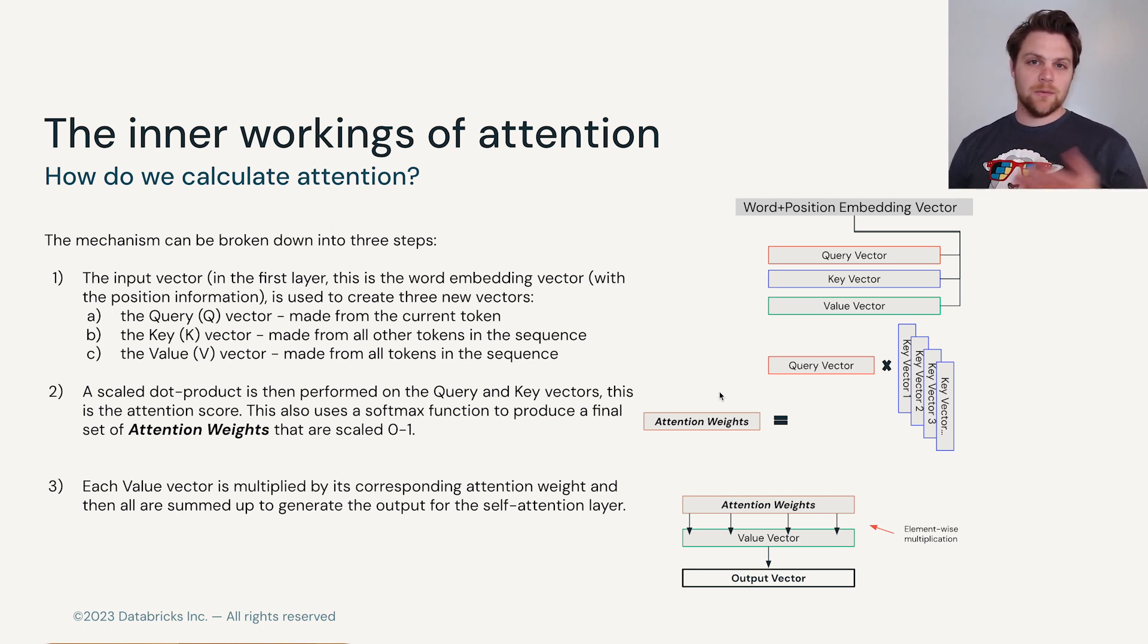We'll take a moment to think about this one more time as attention can be somewhat complicated. Realistically, you can think of this as some kind of filing cabinet and lookup system where we have our query, which comes from the current token, and we're looking through the files to see how well each of the different other files, these are the key vectors, have the information that we need. That would be the value vector.